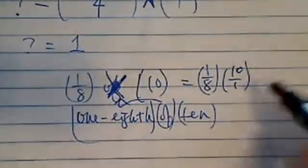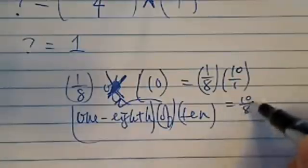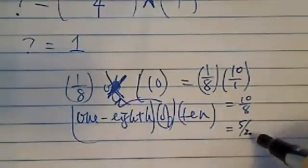If you simplify it, it's ten-over-eighth and five-over-four.